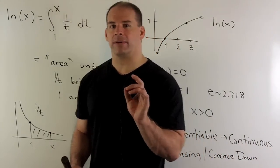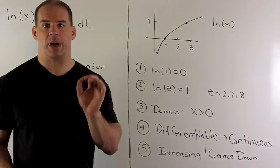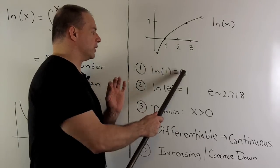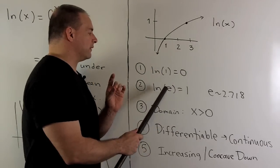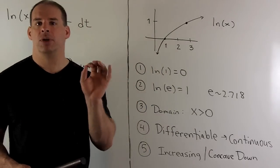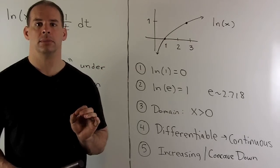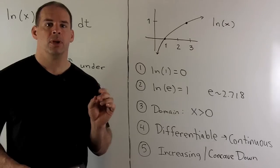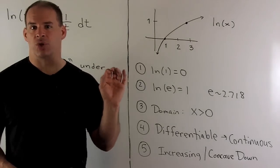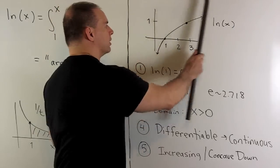Let's recall what we have for the graph of natural log of x. First, we have some special values: natural log of one is equal to zero, and natural log of e is equal to one. e is roughly 2.71, so it's going to be a special number. Then, the domain of natural log of x is just x greater than zero, so we're only going to have a graph in that region.